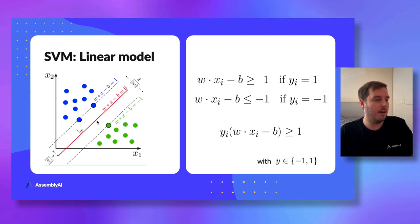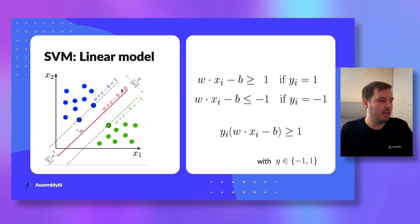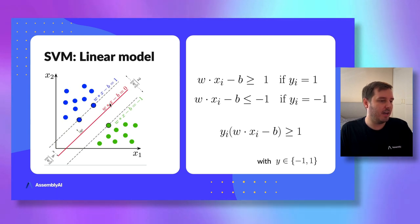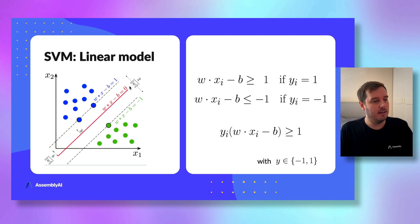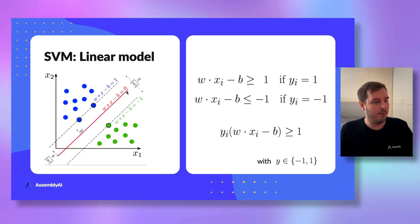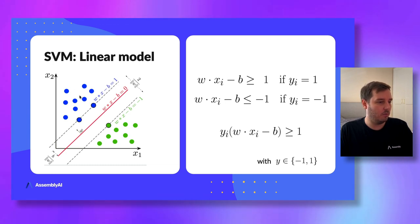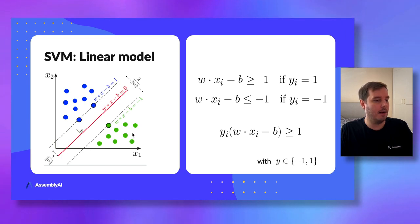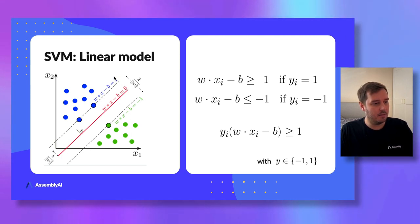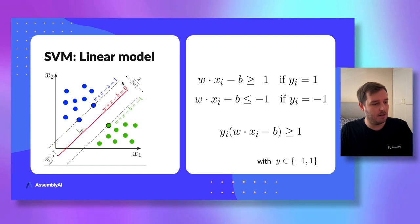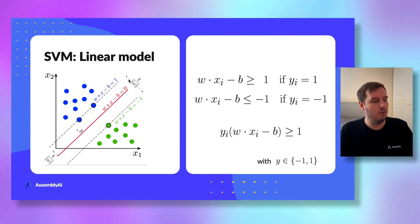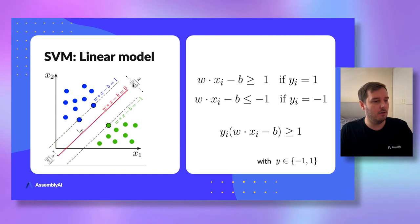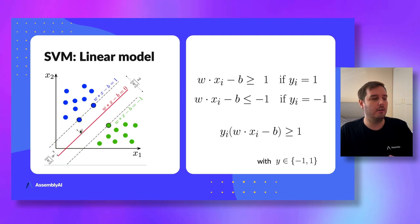If we describe this mathematically, we have the line equation w times x minus b. This should be zero at the decision boundary, one on the side where the class is plus one, and minus one on the side where the class is minus one. This margin can be calculated as two over the magnitude of w, where w are the weights — what we have to learn during training.